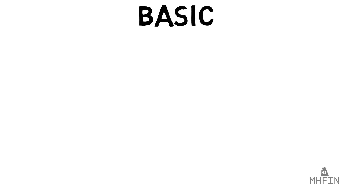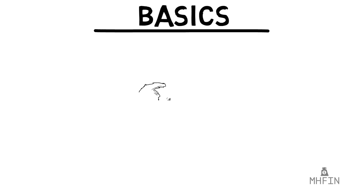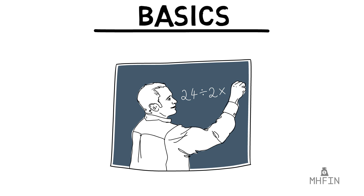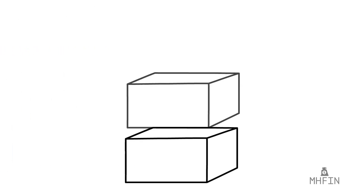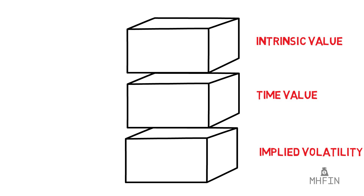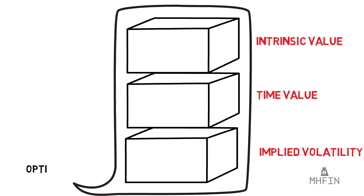The first thing you need to understand about options pricing is that it's extremely complex. This video is intended to break it down into a more simple format, helping you evaluate pricing in a more clear manner — think of it like taking an algebra-based physics class instead of a calc-based one: same concepts, just simplified. The price of an option is the work of a mathematical miracle that can be broken down into three distinct important parts: intrinsic value, time value, and implied volatility. Those three parts combined make up the option price.